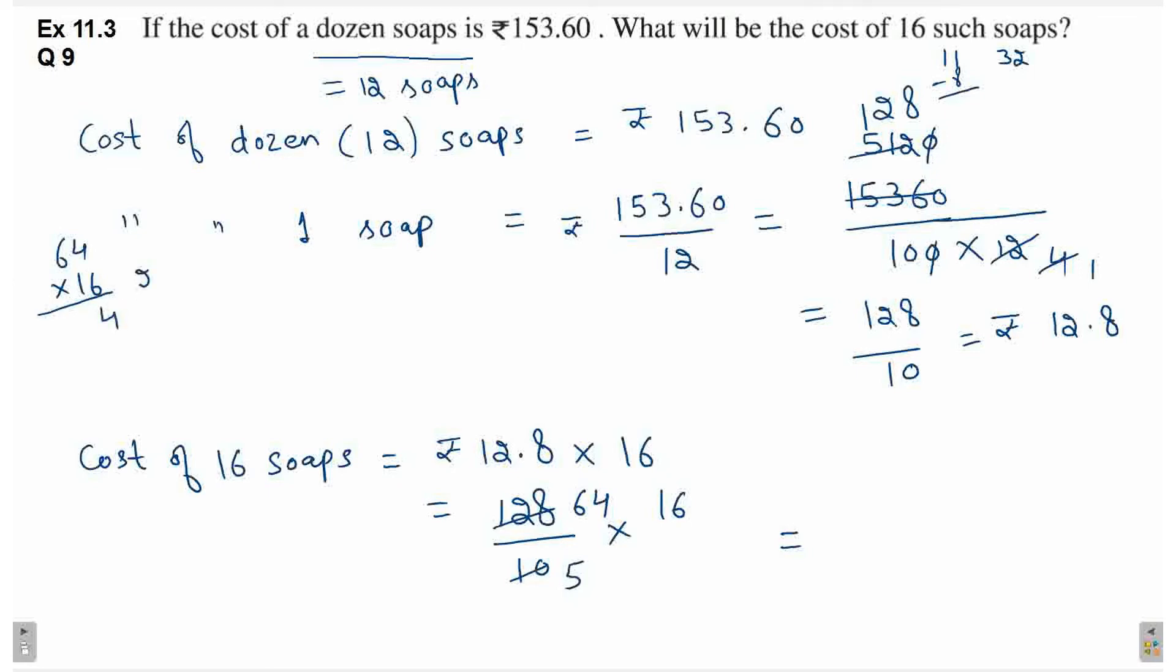6, 4s are 24. 2 carry. 6, 6s are 36 plus 2, 38 multiplied by 64. Toh, ya kitna aya 4? 8 plus 4, 12. 1 carry. 6, 3, 9 plus 1, 10. 1024.